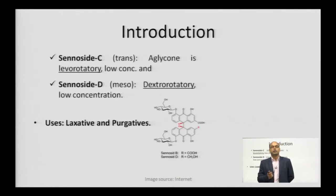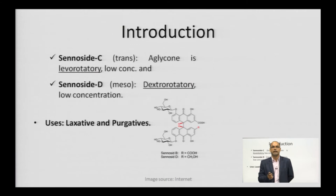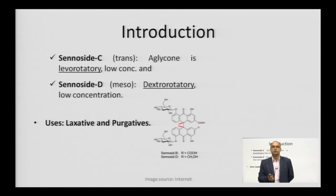Senoside C and Senoside D also occur in trans and meso forms respectively. The aglycone part of Senoside C is levorotatory but occurs in low concentration compared to Senoside A. Senoside A and C exist in trans forms, whereas Senoside B and D exist in meso forms. Senoside D is dextrorotatory and occurs in low concentration compared to Senoside B. Senoside A and B exist in the plant in higher concentration, so isolation is focused on these two. Senosides are used as laxative and purgative.